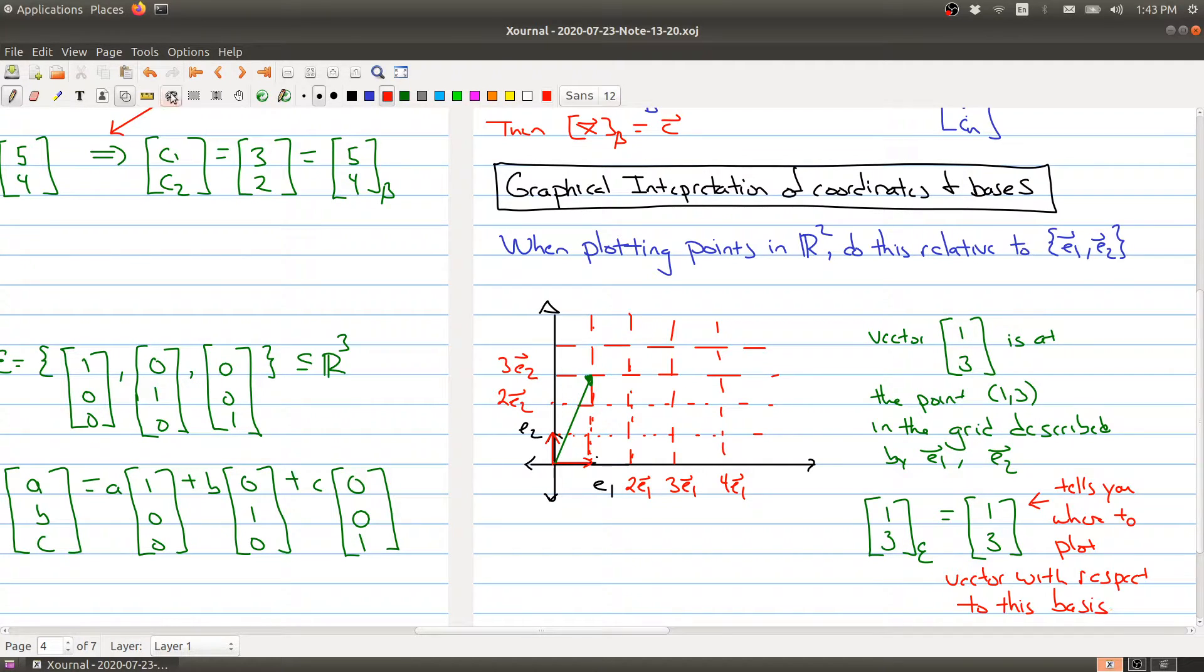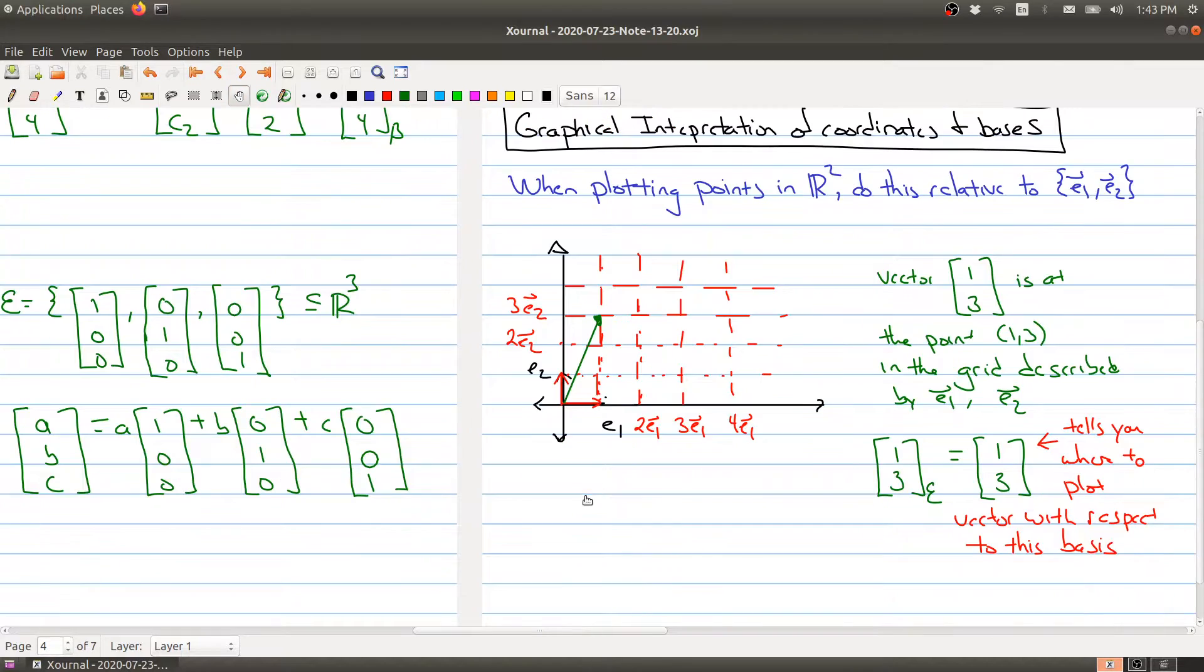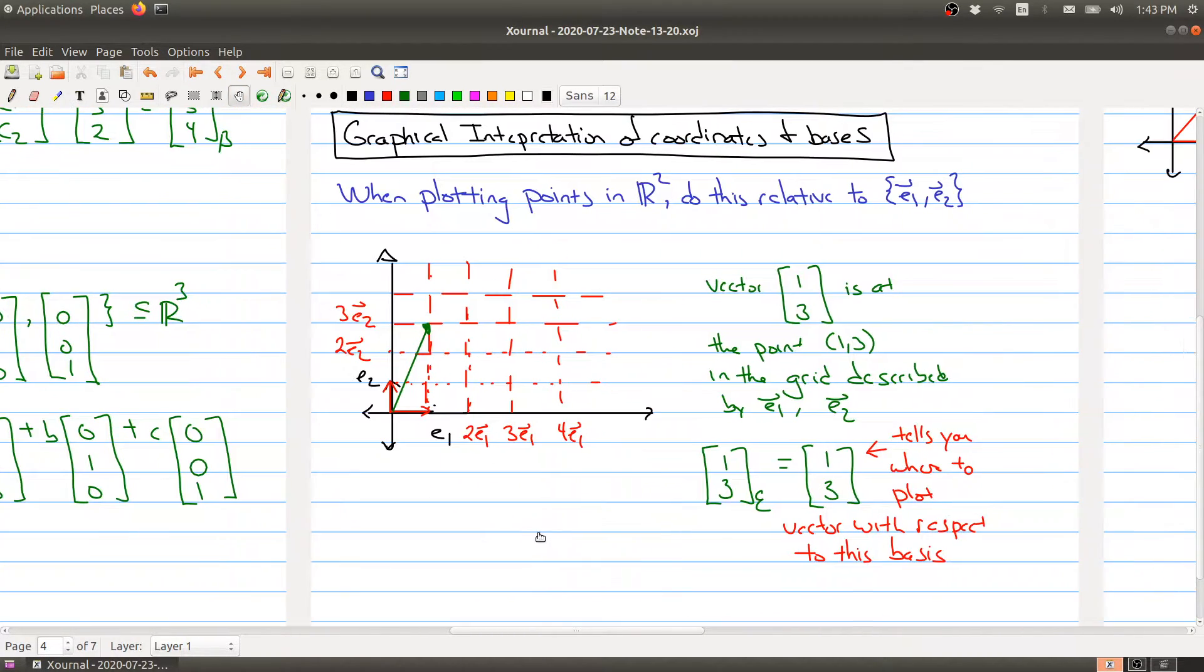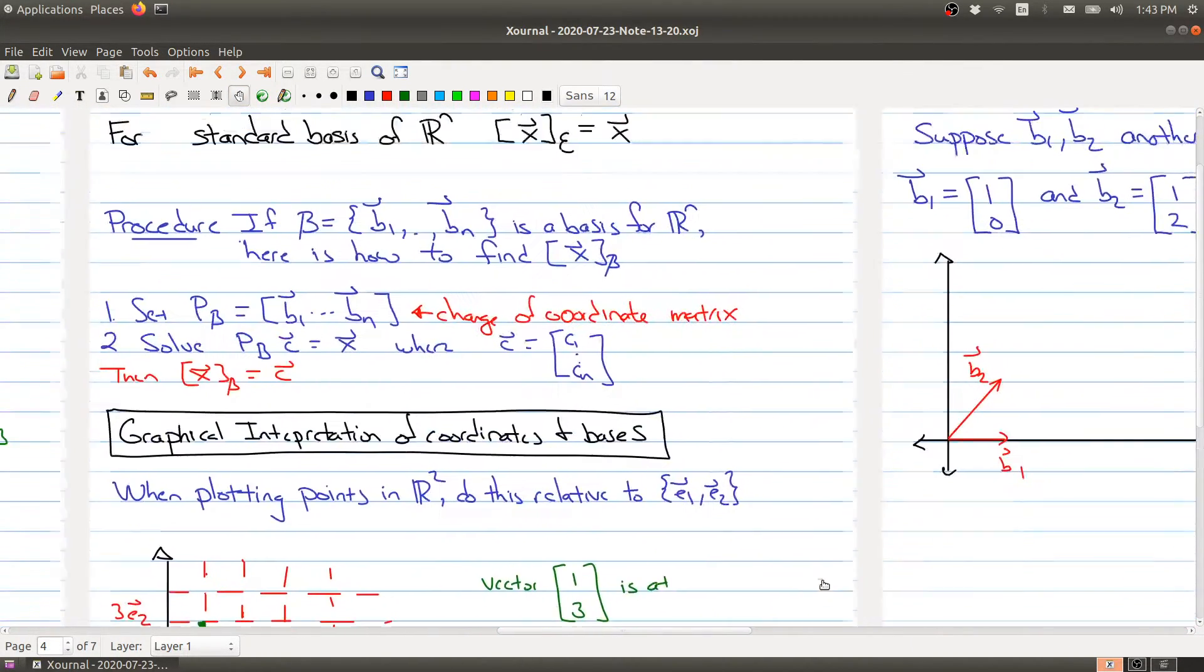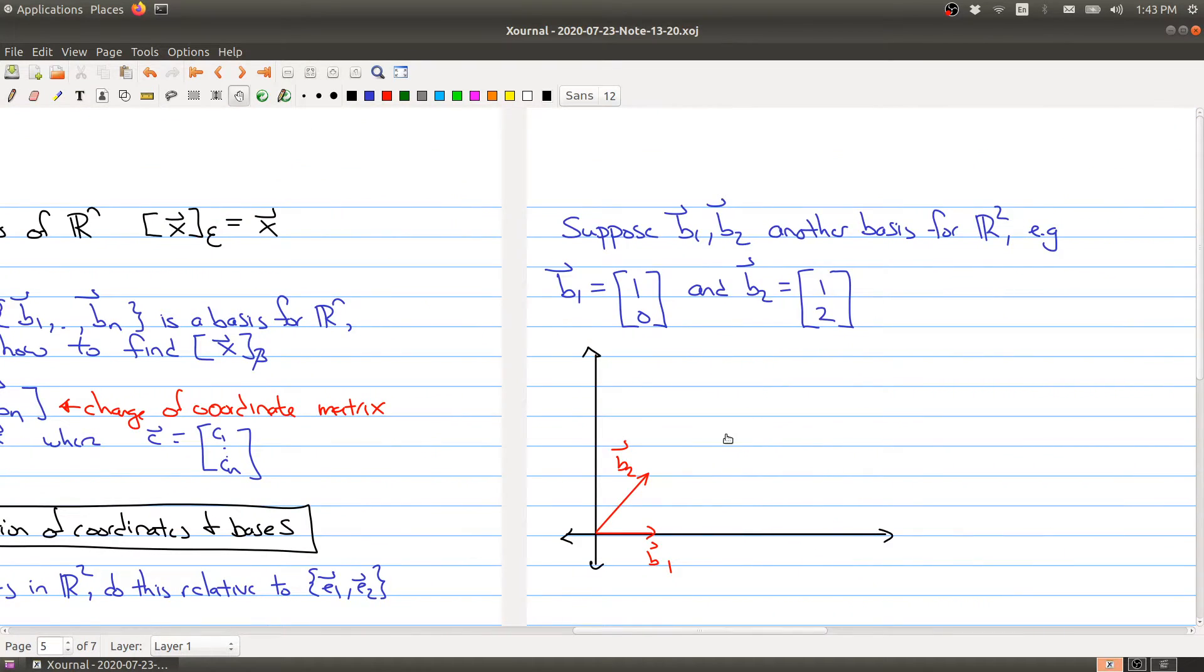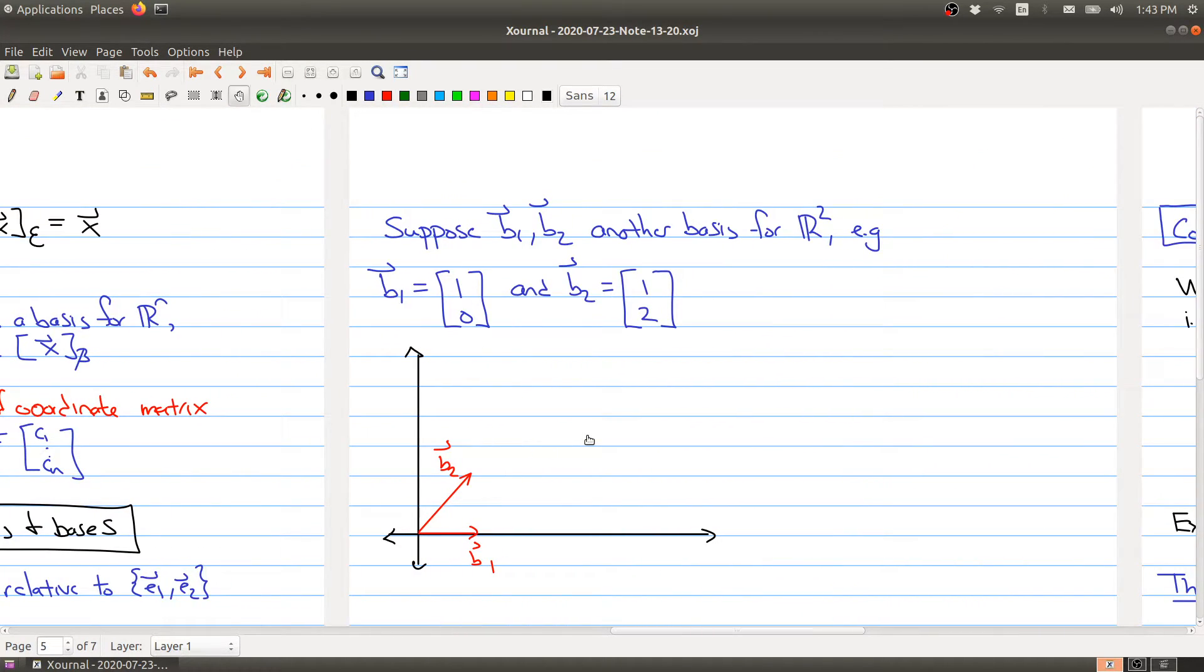So it may help if we look at maybe a different example. This is kind of the standard case. But let's say instead of E1 and E2, we decide we're going to use a different basis for R2. So a different basis for R2 is the vector 1, 0 and 1, 2.